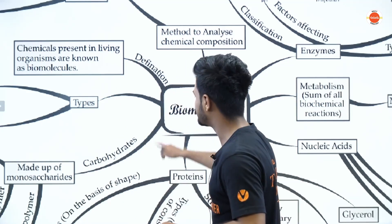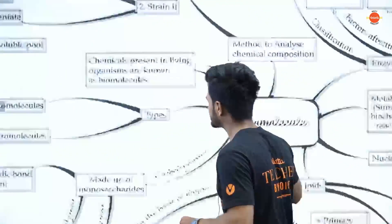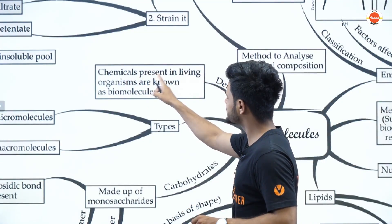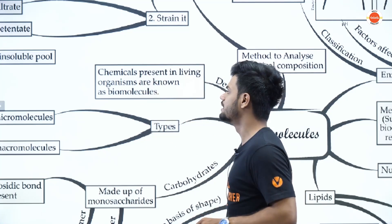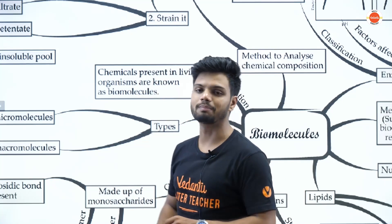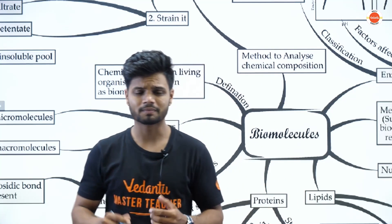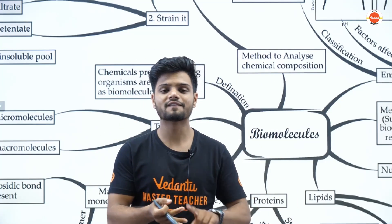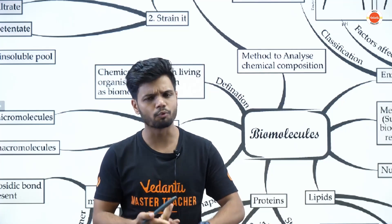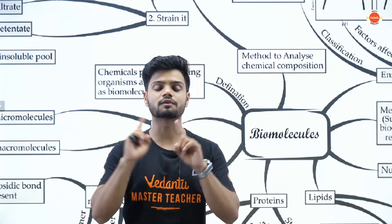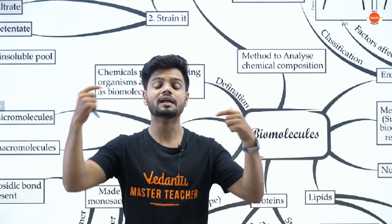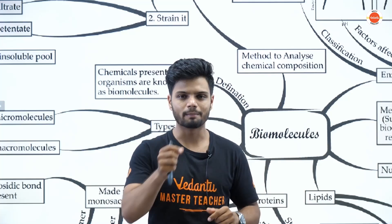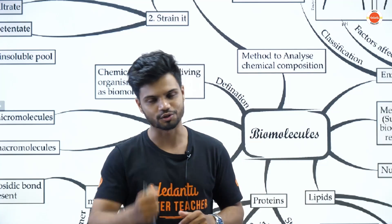Starting off with the basic definition: chemicals present in living organisms are known as biomolecules — that is proteins, lipids, fats, carbohydrates. All of these molecules which are found inside living tissue are called biomolecules.